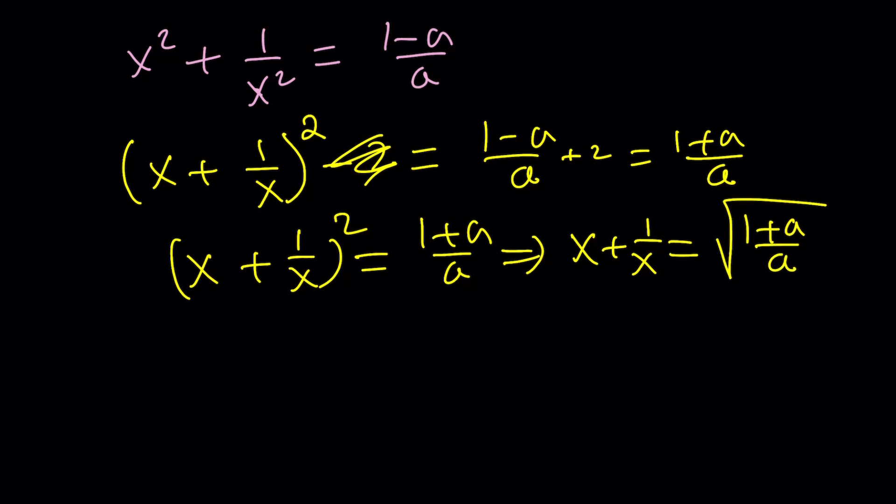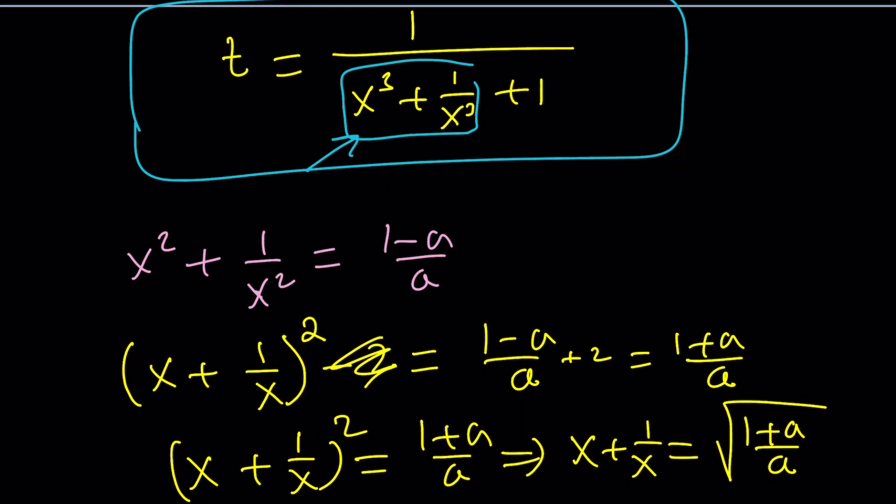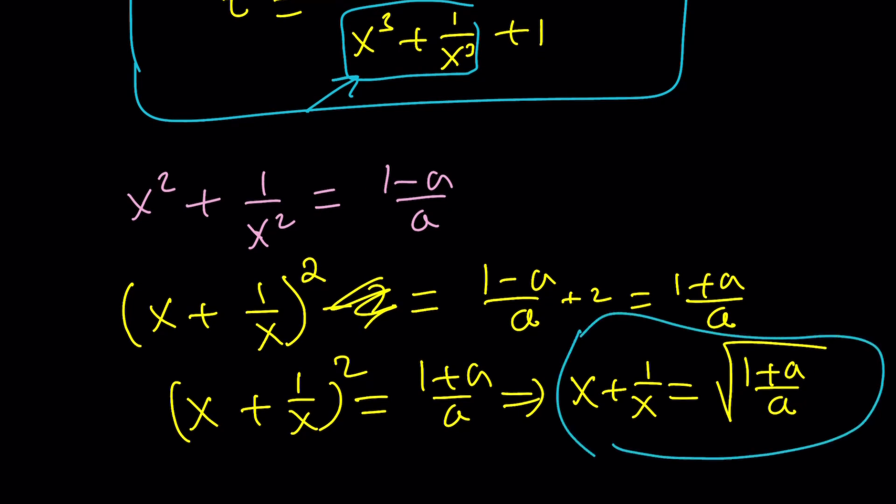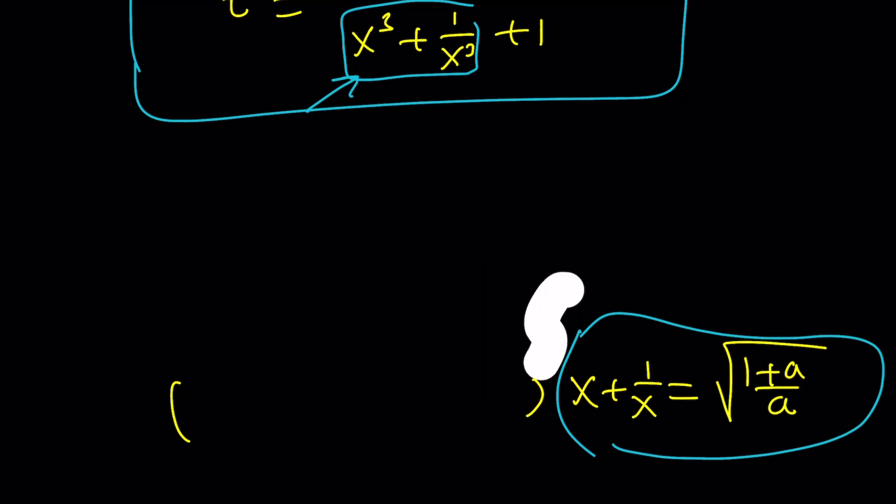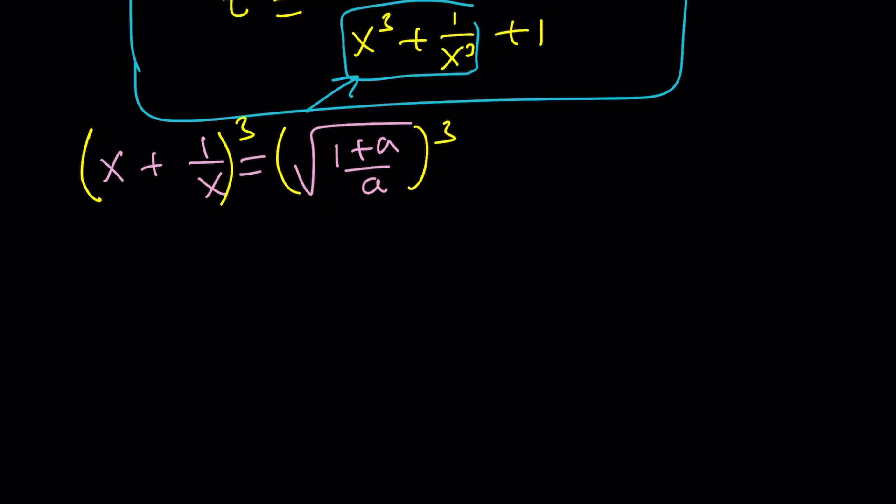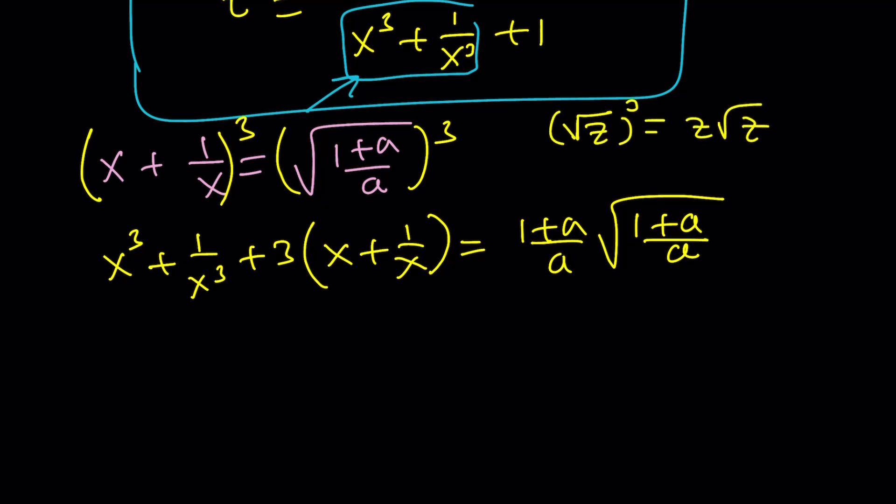Why did I find x plus 1 over x? Because I do need x cubed plus 1 over x cubed. So what I'm going to do now is take this and cube both sides. Make sense? We have x plus 1 over x equals square root of 1 plus a over a. And then I'm going to go ahead and cube both sides. Let's go ahead and cube the left-hand side. It's going to give me x cubed plus 1 over x cubed plus 3 times x plus 1 over x. And then the right-hand side is just going to be 1 plus a over a times the square root of 1 plus a over a. I just used an identity like if you have square root of z cubed, it's just z root z.